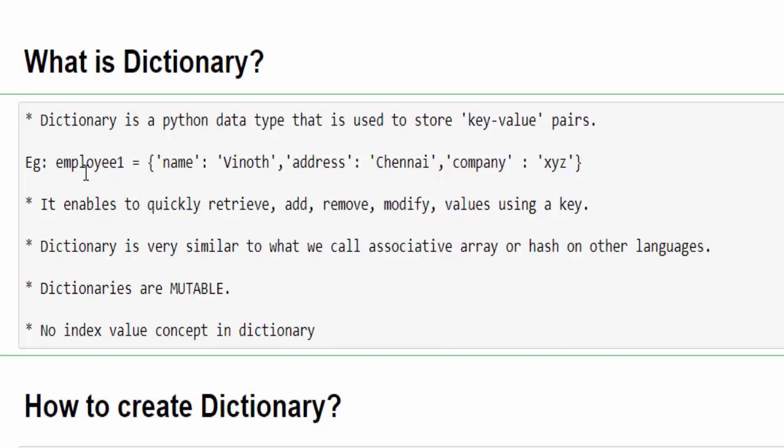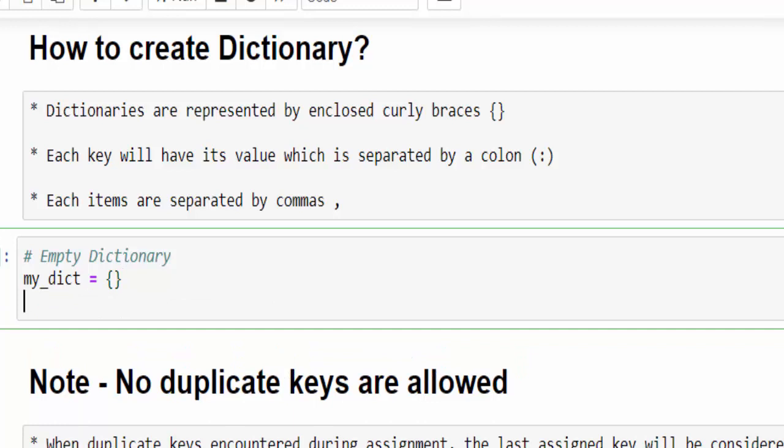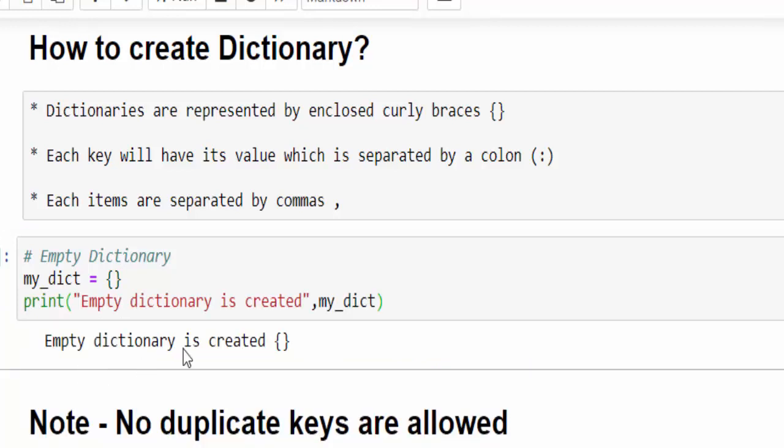It is similar to associative arrays or hash in other programming languages. If you already know those concepts, it's easy to correlate. First, we'll learn how to create an empty dictionary. My dictionary equals curly braces. Whenever you see curly braces, it means it's a dictionary. We created the empty dictionary and printed that empty dictionary is created.